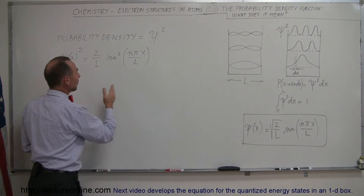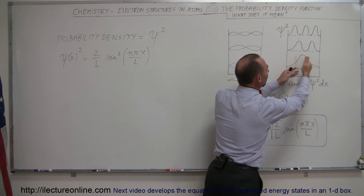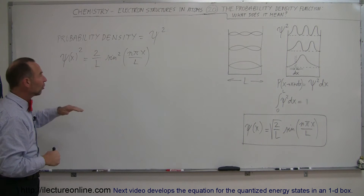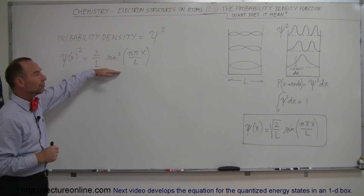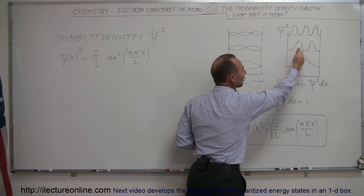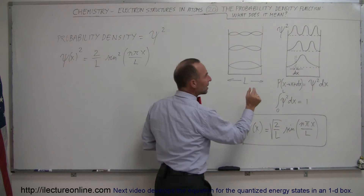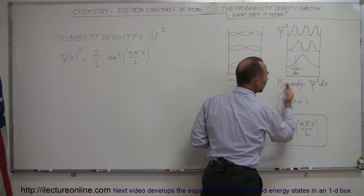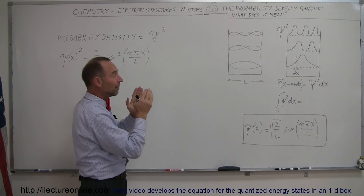Moving toward the middle of the box, the probability increases, with maximum probability at the halfway point — halfway between the left and right sides. Squaring the wave function gives us the probability of where we're likely to find the electron, with the highest probability right in the middle. To calculate the actual probability of finding the electron in a certain range, we plug in a value for x and a value for x plus a small change in x, and determine the probability within that range.